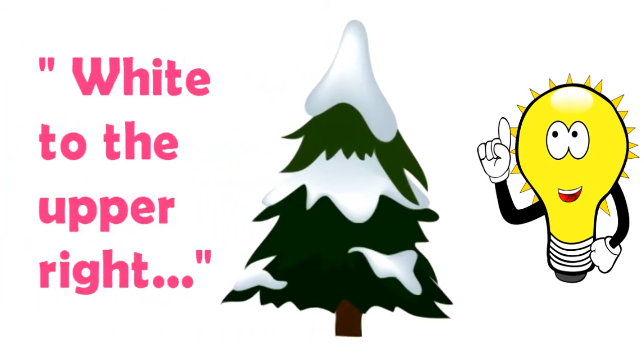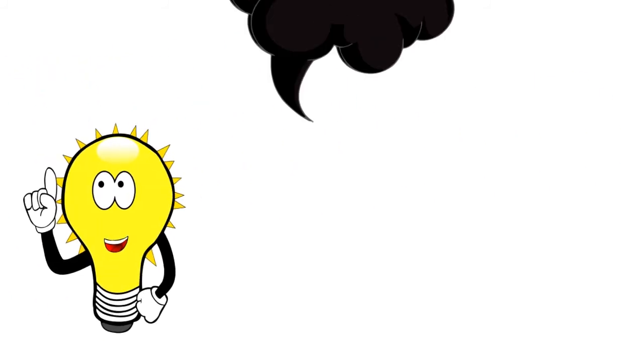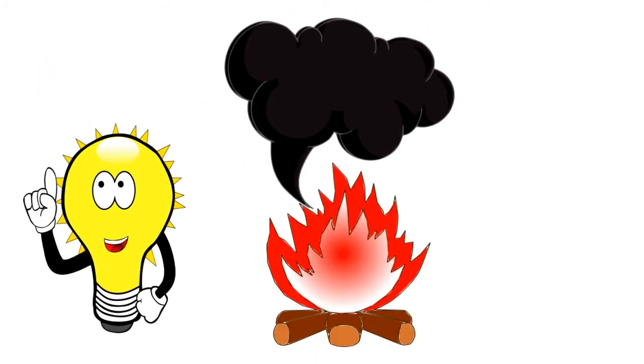that is the white electrode over the green electrode, and think of smoke over fire, that is the black electrode above the red electrode.